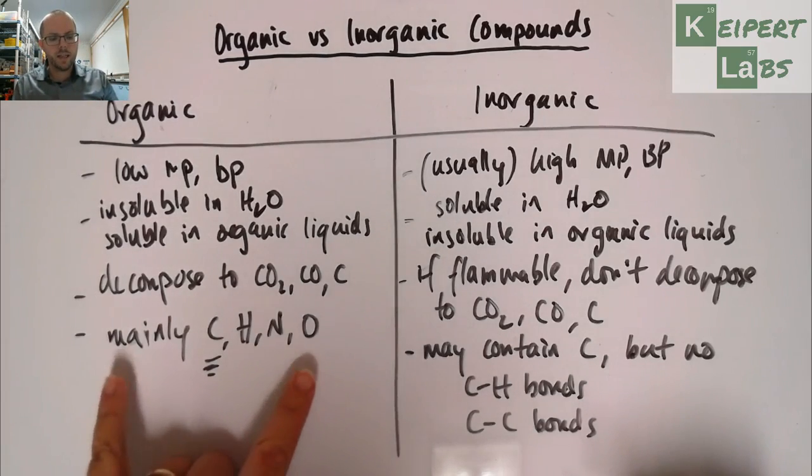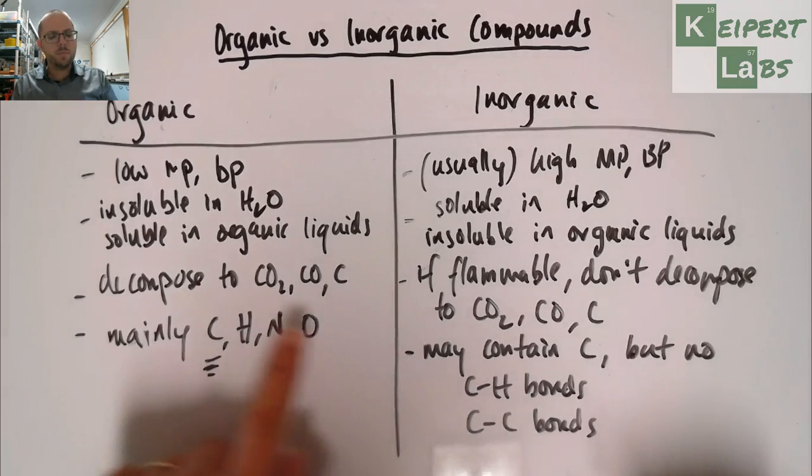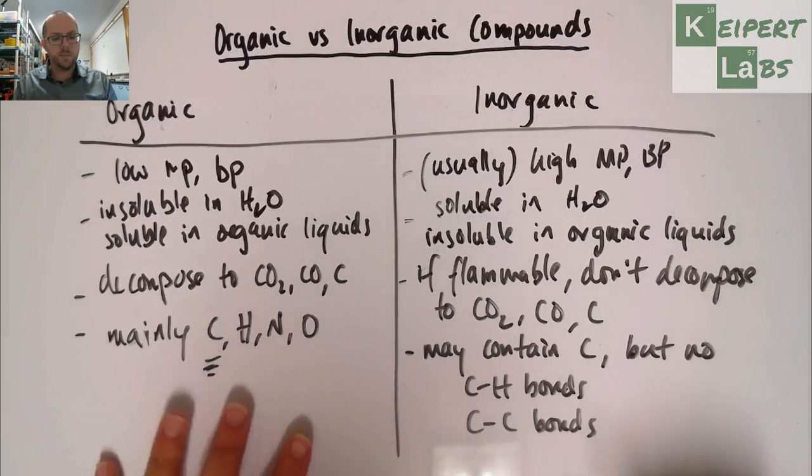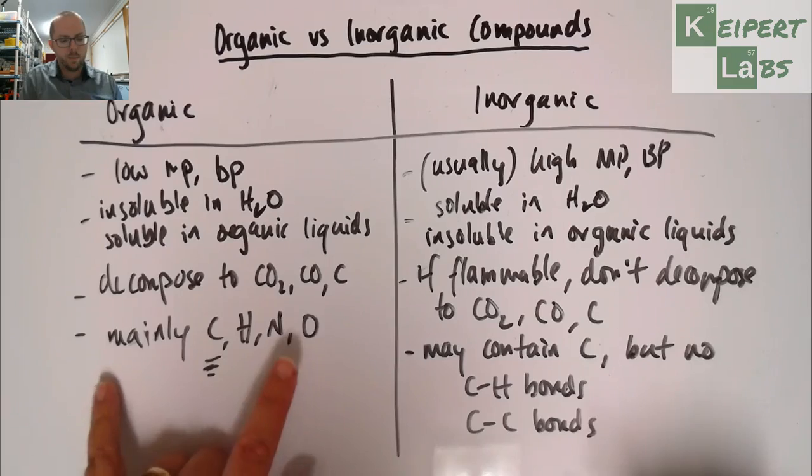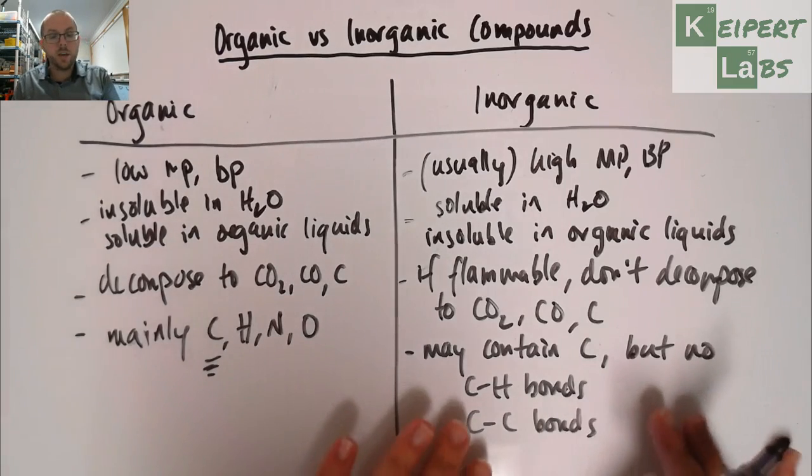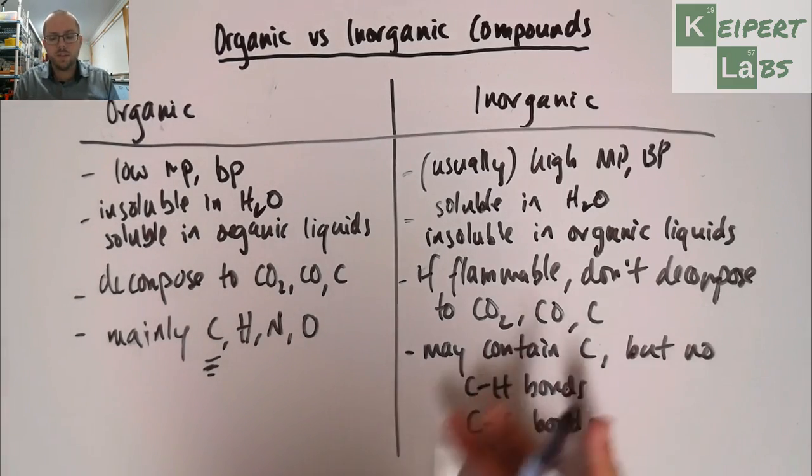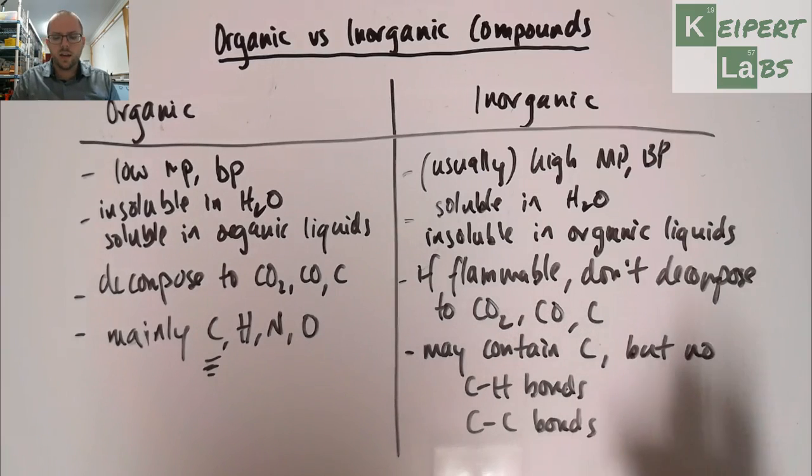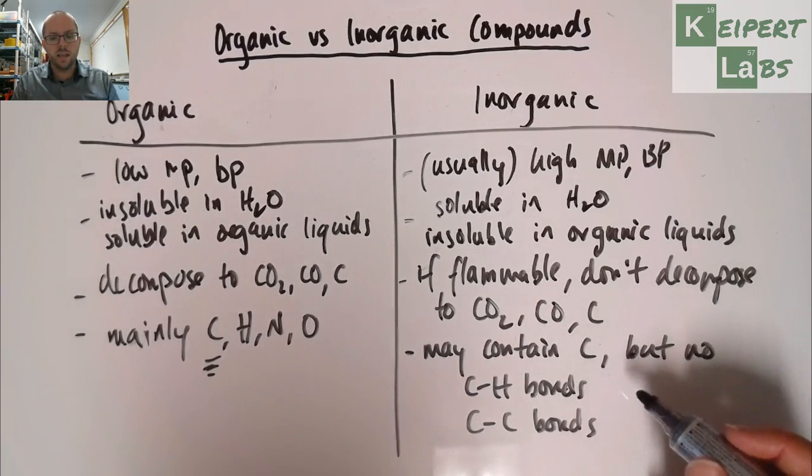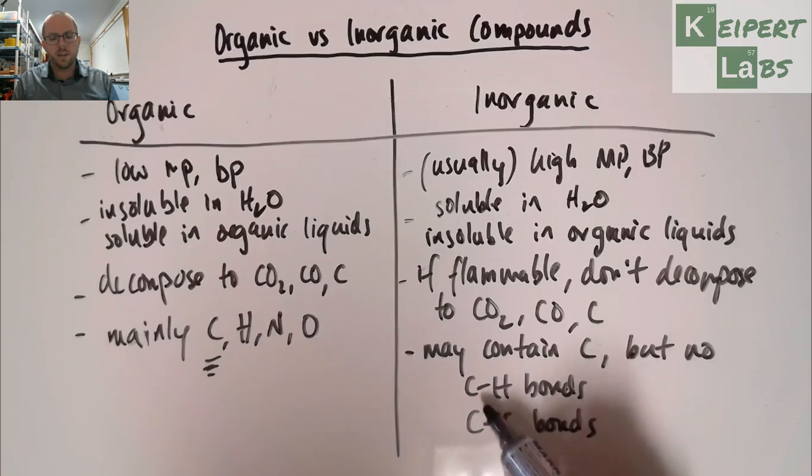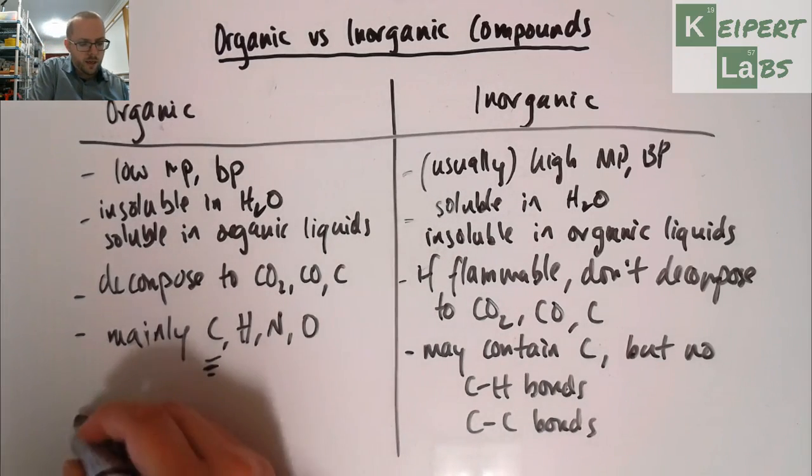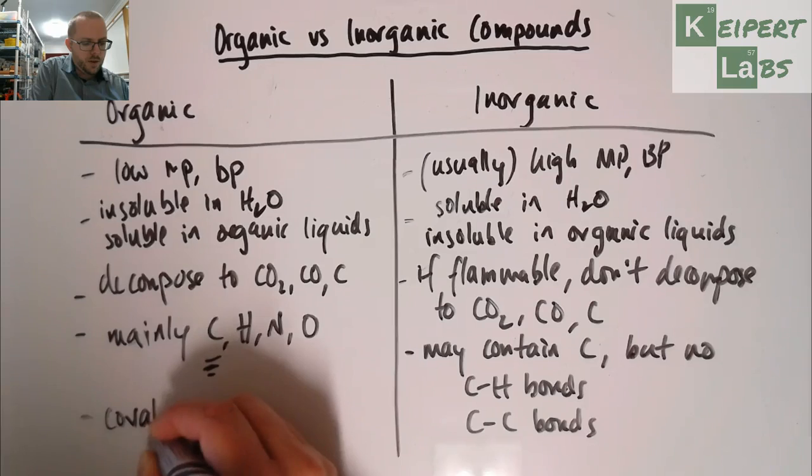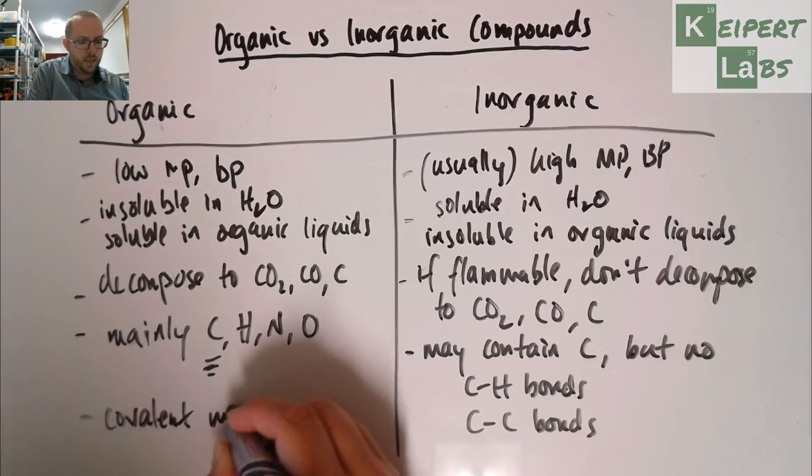So, organic substances would be mainly primarily made up of these four atoms in some arrangement. Whereas inorganic substances, if they do contain carbon, they don't contain these things. For example, carbon dioxide is inorganic, but it doesn't contain either of these things. It does contain carbon.